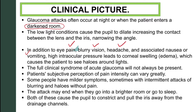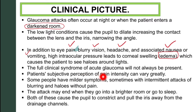In addition to eye pain, there will be blurry vision, headaches associated with nausea and vomiting. High intraocular pressure leads to corneal swelling and edema, which causes the patient to see halos around lights. The full clinical syndrome of acute glaucoma will not always be present — the patient's subjective perception of pain intensity can vary. Some patients have milder symptoms, sometimes with intermittent attacks of blurring and halos without pain.